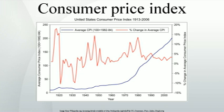At the most detailed level, the elementary aggregate level — for example, men's shirts sold in department stores in San Francisco — detailed weighting information is unavailable, so indices are computed using an unweighted arithmetic or geometric mean of the prices of the sampled product offers. However, the growing use of scanner data is gradually making weighting information available even at the most detailed level. These indices compare prices each month with prices in the price reference month, with weights relating to estimated expenditures during a preceding whole year.